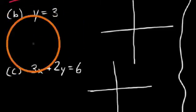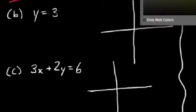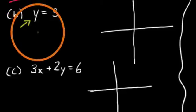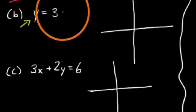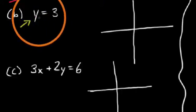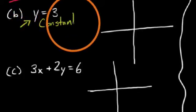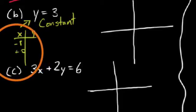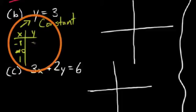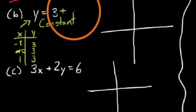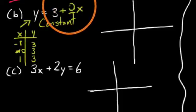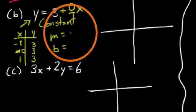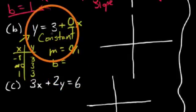Let's move to the next example. We have another y equals equation, so we can safely assume it's in slope-intercept form. But you might say you don't see a slope term — there's no something times x here. When you see y equals 3, we call this a constant function. It's still linear, but we say constant because no matter what you plug in for x, y is constantly 3. We could insert a 0 times x term — this is an example where the slope is 0.